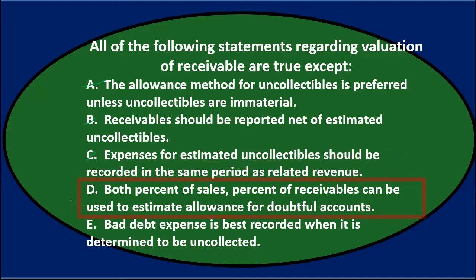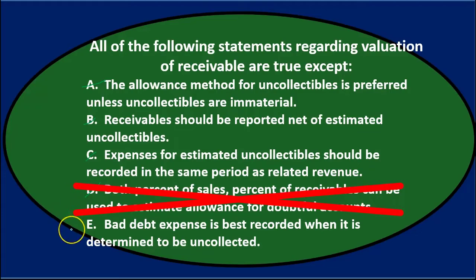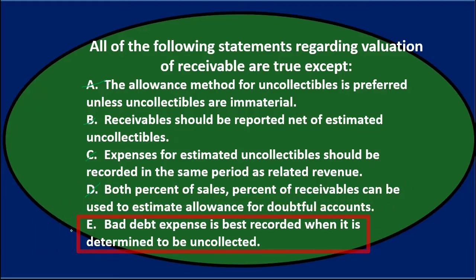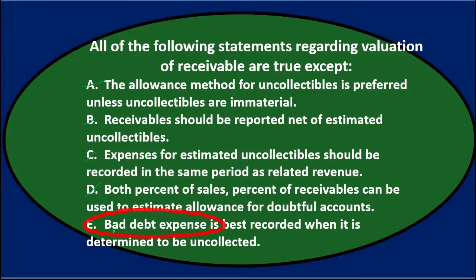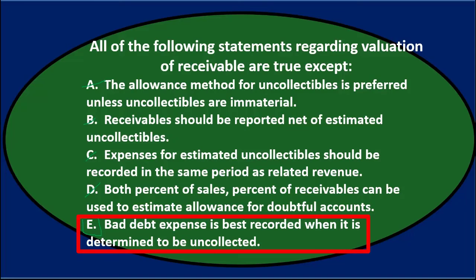D says both percentage of sales and percentage of receivables can be used to estimate the allowance for doubtful accounts. Those are two valid methods under the allowance method, so that's correct and not the right answer. E says bad debt expense is best recorded when it is determined to be uncollectible — that describes the direct write-off method, which is not the preferred method. It doesn't follow the matching principle or align with accounting concepts best. So E is incorrect, and therefore is the correct answer.